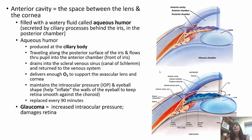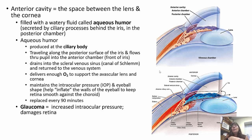The anterior cavity is the space between the lens and the cornea, filled with a watery fluid called aqueous humor. The ciliary processes behind the iris secrete aqueous humor; it travels along the posterior surface of the iris, flows through the pupil into the anterior chamber, then drains into the scleral venous sinus — also called the canal of Schlemm — and is returned to the venous system. Aqueous humor delivers oxygen to the avascular lens and cornea and helps maintain intraocular pressure. If intraocular pressure increases, you'll have glaucoma, which can damage the retina over time.